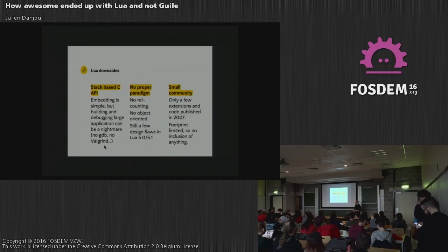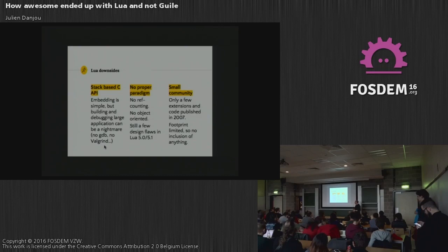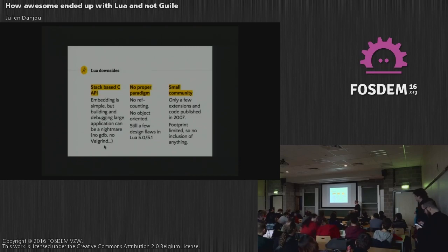The Lua downsides I found — I wrote a big blog post about this a few years ago — the stack-based C API is really not something I like, because to debug it back then you had to use your own tools. It was not supported by GDB or Valgrind or whatever, so tracking memory leaks on the Lua stack was a nightmare. There's no pairing, no object ref counting in Lua 5.0 or 5.1 which we were using. The community was small, but it really grew when we started using it with Awesome.